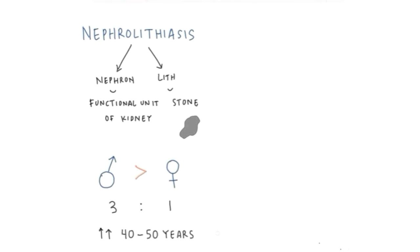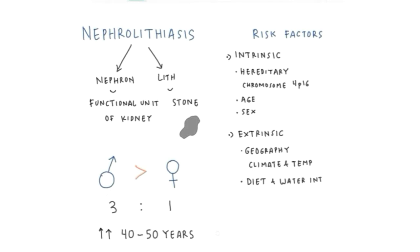There are a number of things that are most at risk of developing nephrolithiasis, divided into two groups: intrinsic factors and extrinsic factors. Intrinsic factors include hereditary—some researchers associate it with chromosomal abnormalities in band 4p16—and also age and sex. The extrinsic factors include geography like climate change and increased daily temperatures, also diet and water intake, and your jobs.